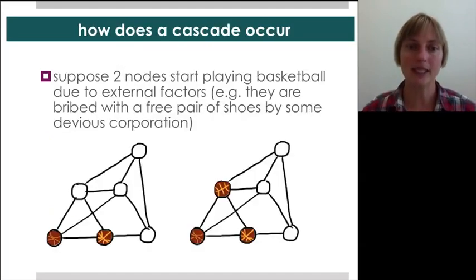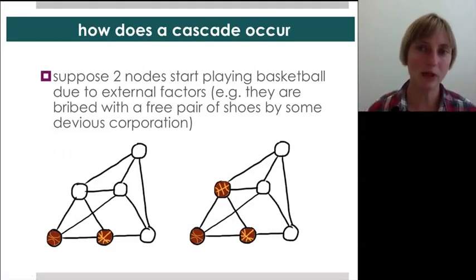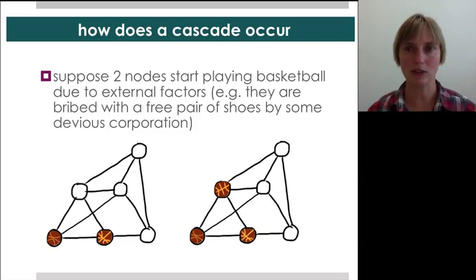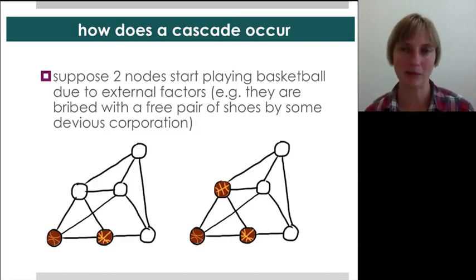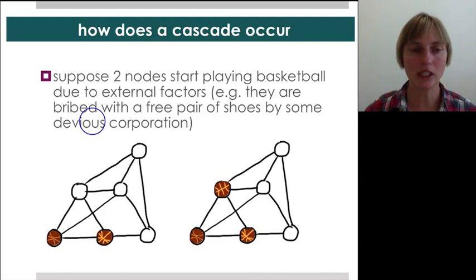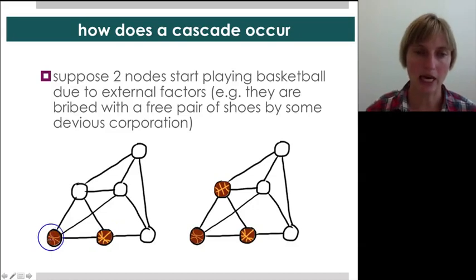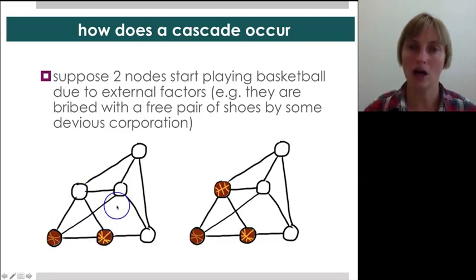So, let's see how this cascade might occur. Suppose you have some devious company that comes in and says, we'll give you free shoes, you know, named, branded with some basketball player's name, if you play basketball and you don't play soccer. And so, these two nodes then start playing basketball. Now, this node is looking and it's finding that half of its friends, so two out of four, are playing basketball. And since the threshold for switching over is two-fifths, now this node as well is playing basketball.